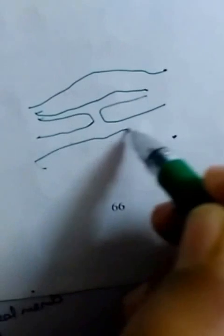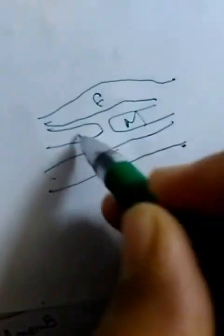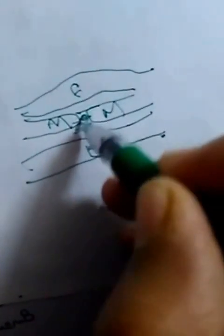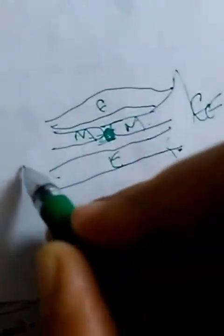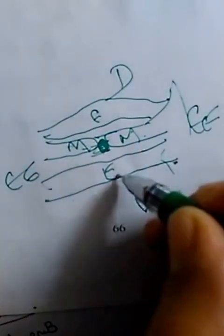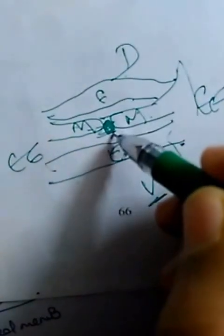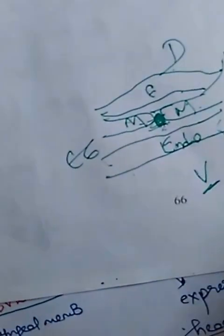As shown in this cut section diagram, this is ectoderm, this is endoderm, and the invaginating part in between — where there is no notochord — this is mesoderm. All the surrounding area is extra-embryonic mesoderm. So this part is dorsal and this part is ventral.